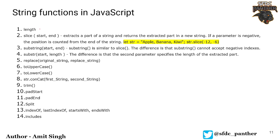The very first function is length, which tells you the length of your string. Then we have slice, which gives you a particular part of a string from a starting character to an ending character — these are the number values we need to provide. When we define these parameters as negative, it starts counting from the end; when positive, it starts counting from the beginning.